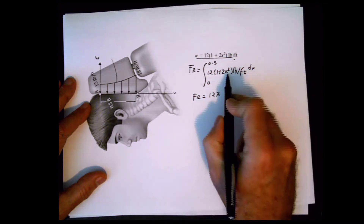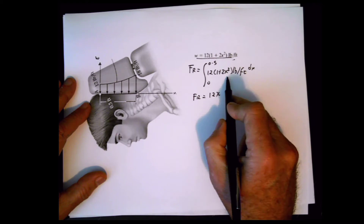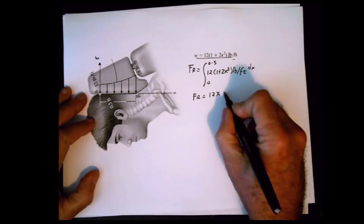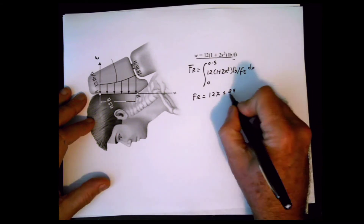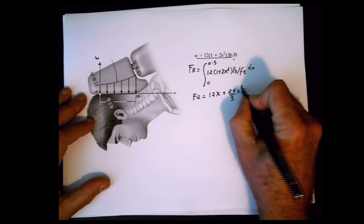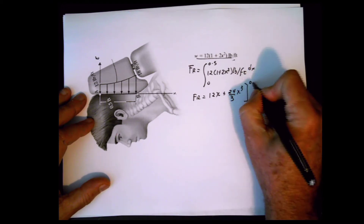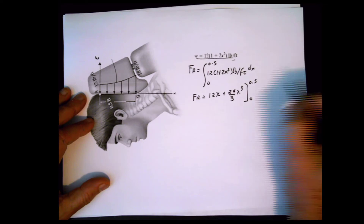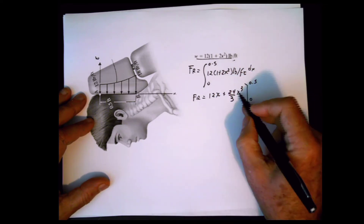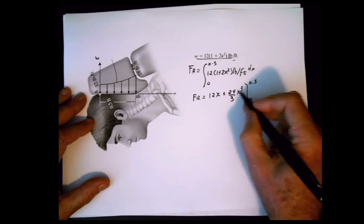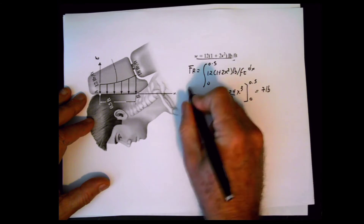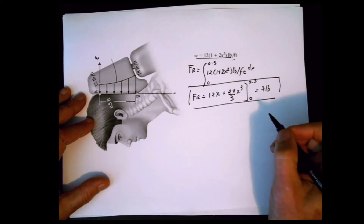When you integrate 12 times 2x squared, that's 24x cubed divided by 3, which is 8x cubed. Evaluating between 0 and 0.5: 12 times 0.5 gives 6, and 8 times 0.5 cubed gives 1. Adding them up gives 7 pounds — first question solved.